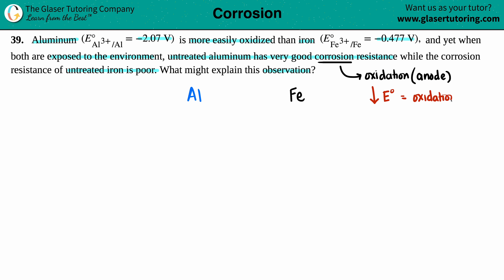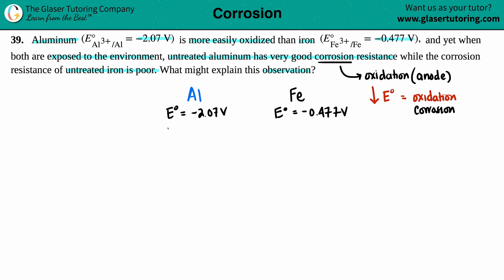Because aluminum has a standard potential of negative 2.07 volts and iron's standard potential is only negative 0.477 volts, aluminum is more easily oxidized — it has the lower number. So between the two of them, aluminum has the lower number, making it easier to oxidize. Lower number means easier to oxidize.